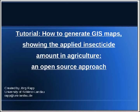Hello. In this tutorial I will explain how to generate GIS maps showing the applied insecticide amount in agriculture. In the further steps I will use the open source softwares Saga GIS, GRASS GIS and LibreOffice.